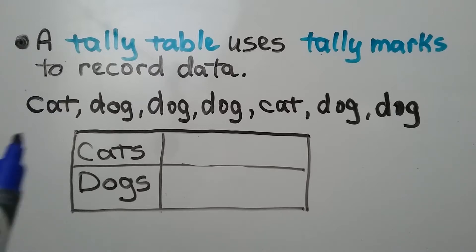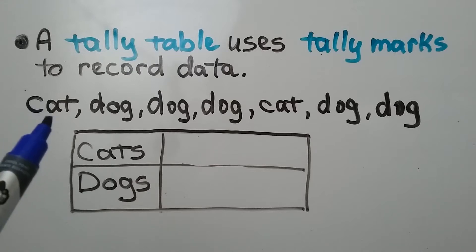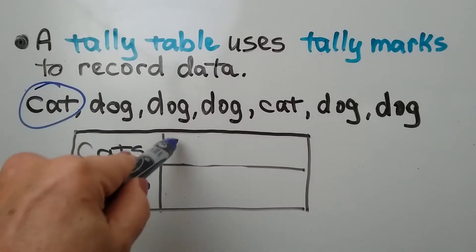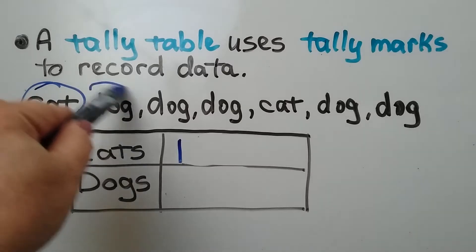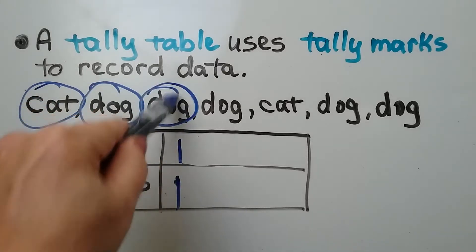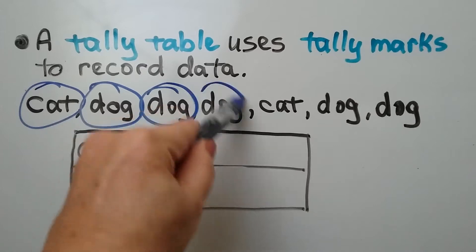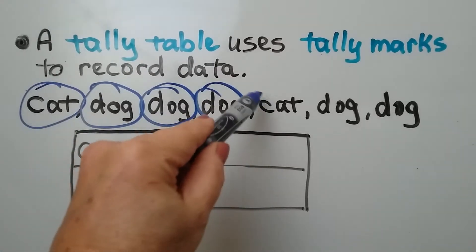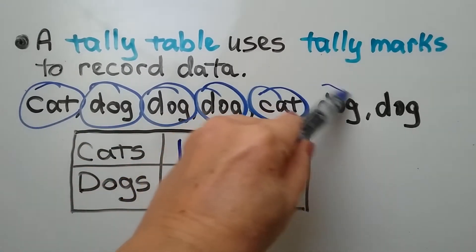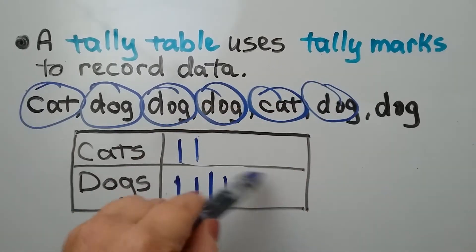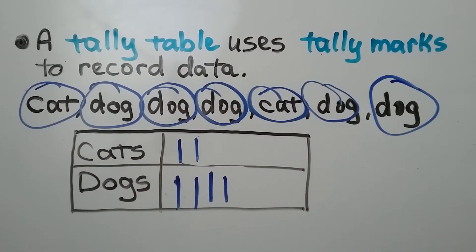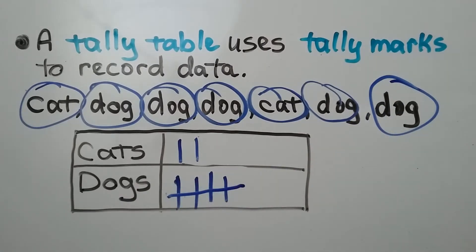So if we have a list of these pets, we can say: I see one cat, so we can circle it so that we know we made a tally mark. A dog, another dog, another dog, a cat, a dog, and then another dog. When we have four tally marks, to mark the fifth dog we cross the four tally marks. Then we can easily skip count our tally marks by fives.